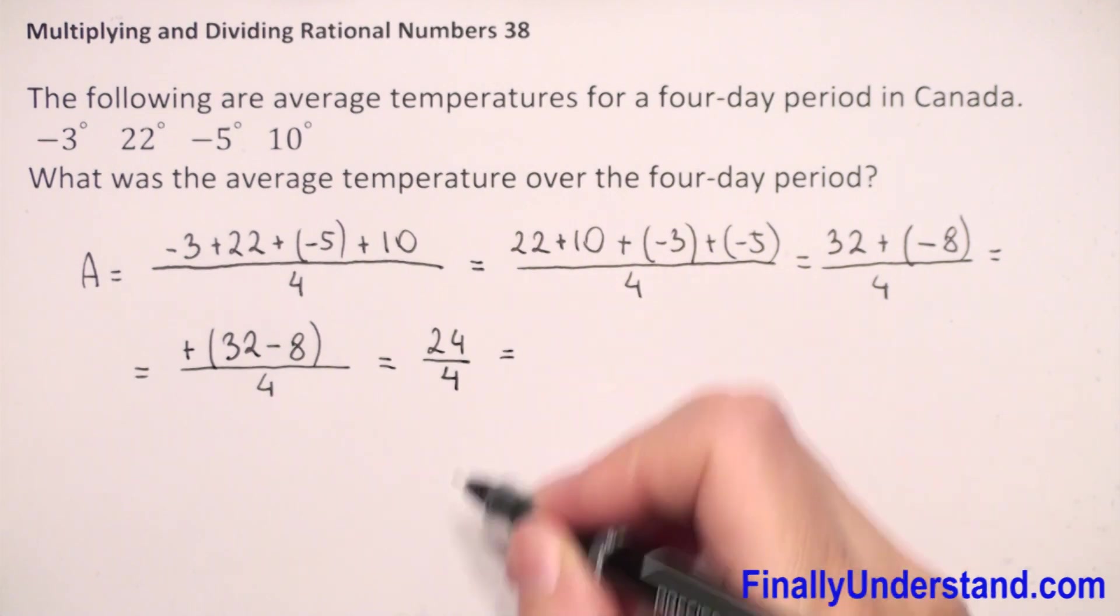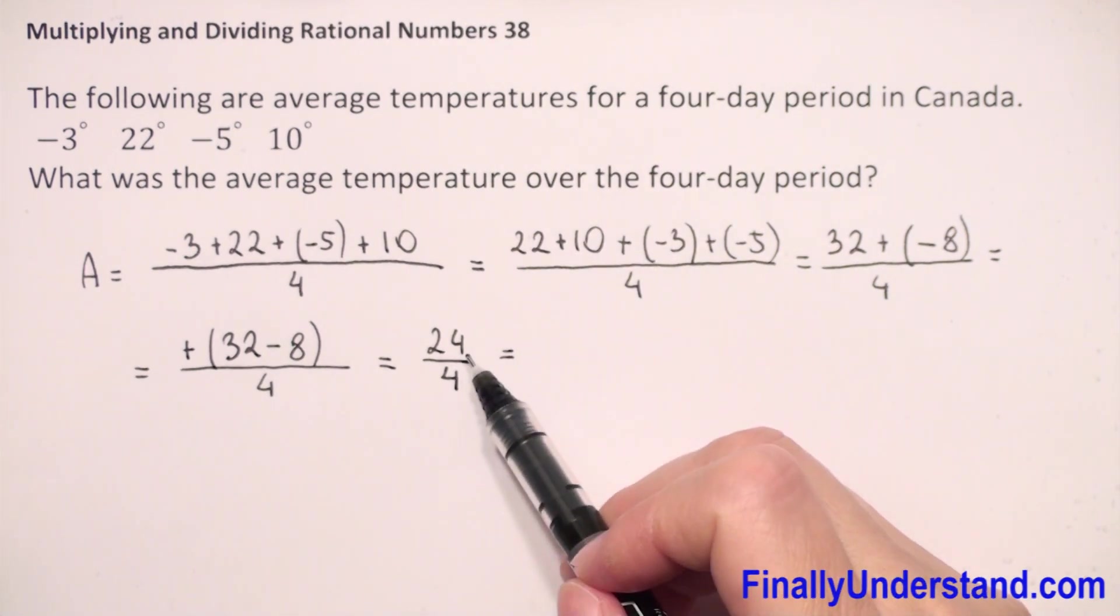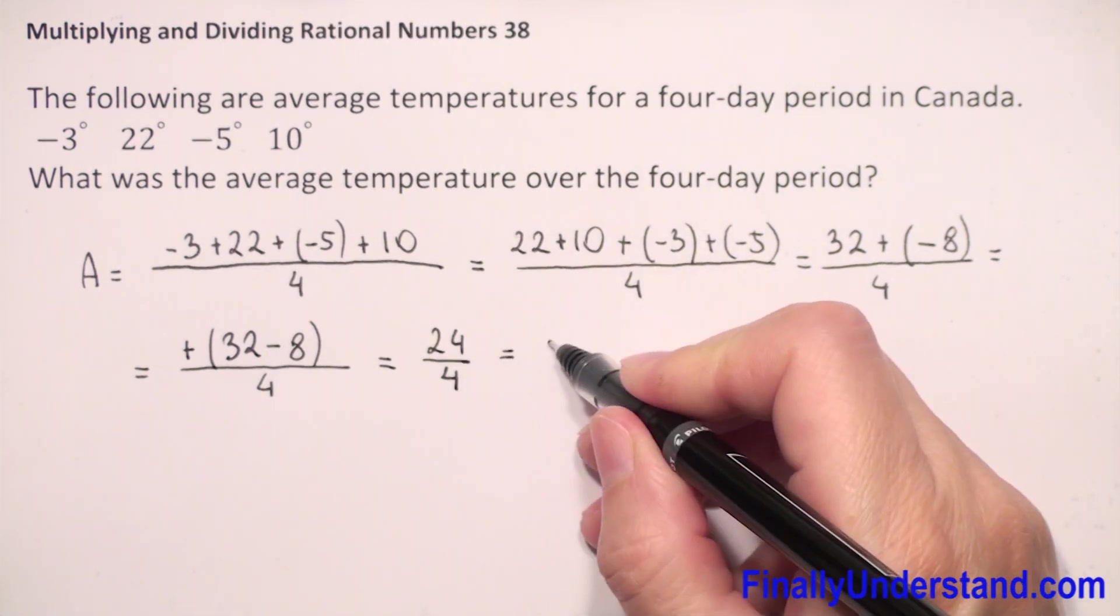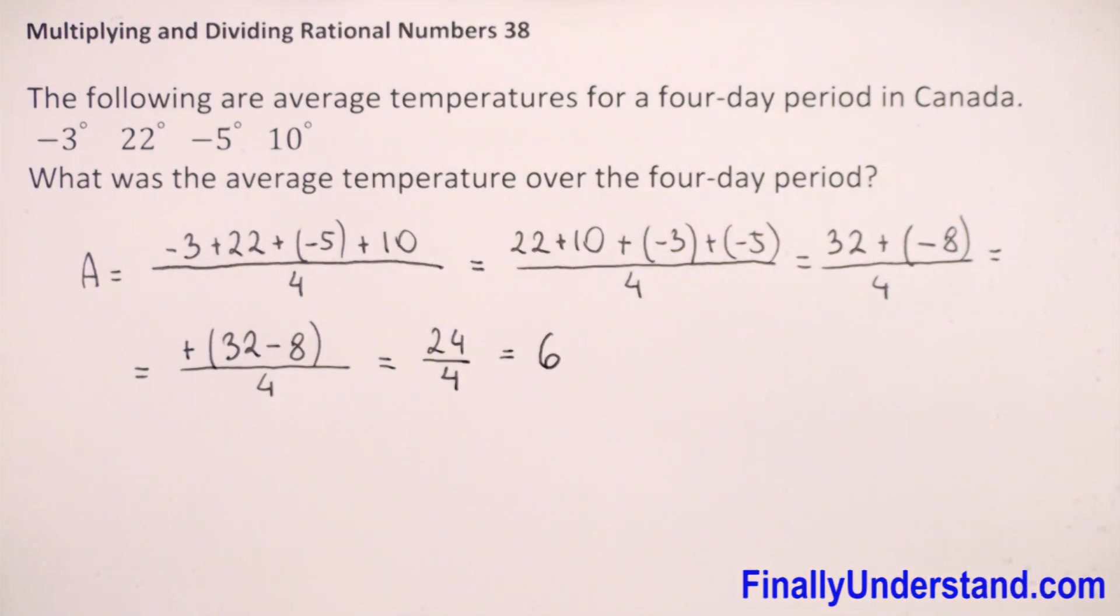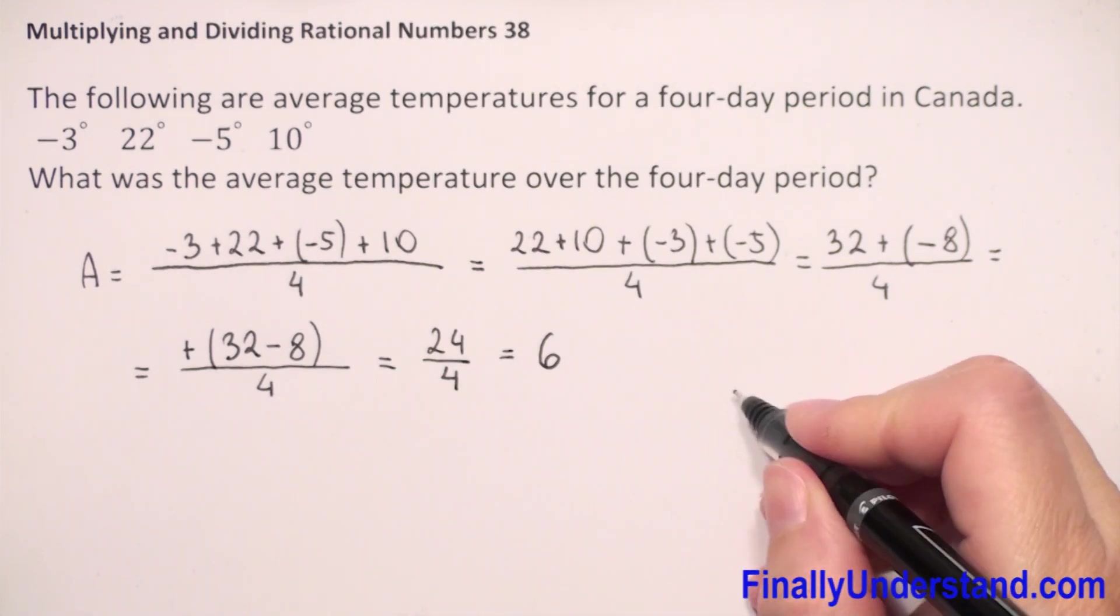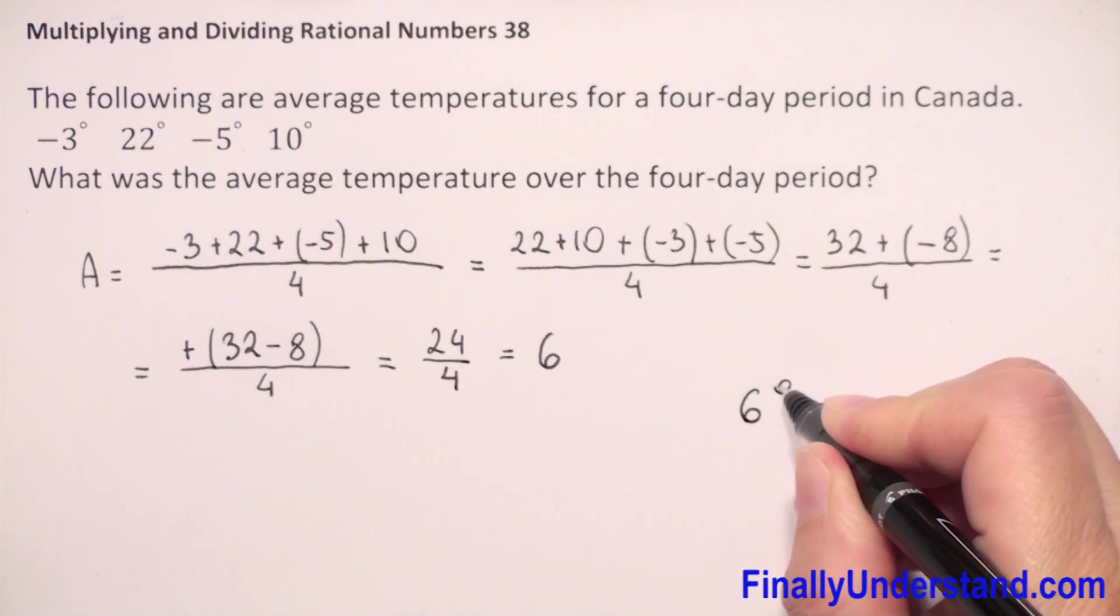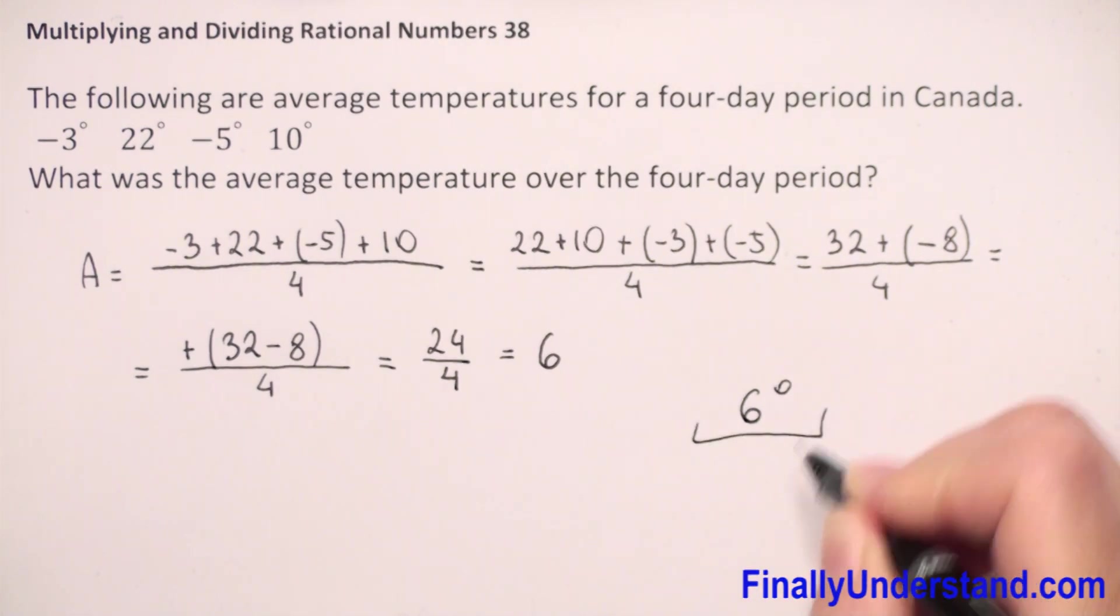So this is equal to... 24 divided by 4 is 6. So the answer will be that the average temperature over the four-day period was 6 degrees. I cannot forget about degrees. This is my solution. See you next time.